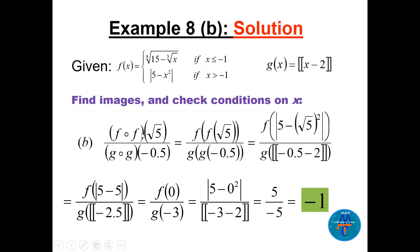Part b: (f∘f)(√5) and (g∘g)(−0.5). For f∘f: f(√5) — √5 > −1, so |√5 − (√5)²| = |√5 − 5| ... then f(0): 0 > −1, so |0 − 0²| = 0... working to f(0) = 5. For g∘g(−0.5): g(−0.5) = ⌊−0.5 − 2⌋ = ⌊−2.5⌋ = −3. Then g(−3) = ⌊−3 − 2⌋ = ⌊−5⌋ = −5. Dividing: −5/5 = −1.